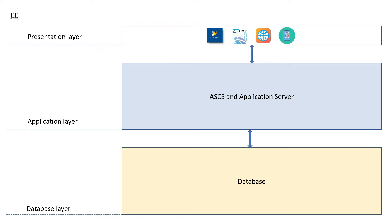Then there is the application layer. This is where the ABAP or application server of an SAP system is located. The application server is the foundation of any SAP system — it is the engine that receives and processes all the requests, interacts with the database to retrieve the required information, and sends it back to the presentation layer. Then there is the database layer, which is where the database of a system is located. All software applications that follow the client-server model have these three layers as their basic architectural principle, and SAP systems are no exceptions here.